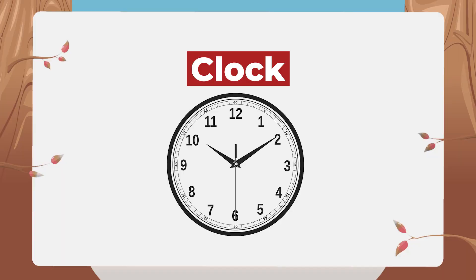Look at the clock — it has 12 numbers from 1 to 12. It has two hands: one is the short hand and the other is the long hand. The short hand is called the hour hand and it shows hours. A day has 24 hours. The long hand is known as the minute hand and it shows minutes.